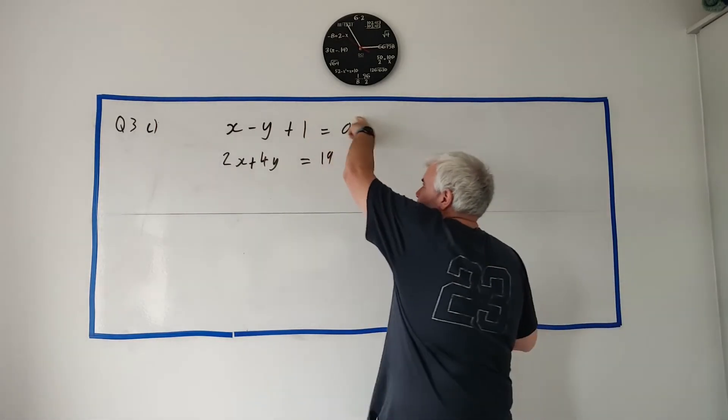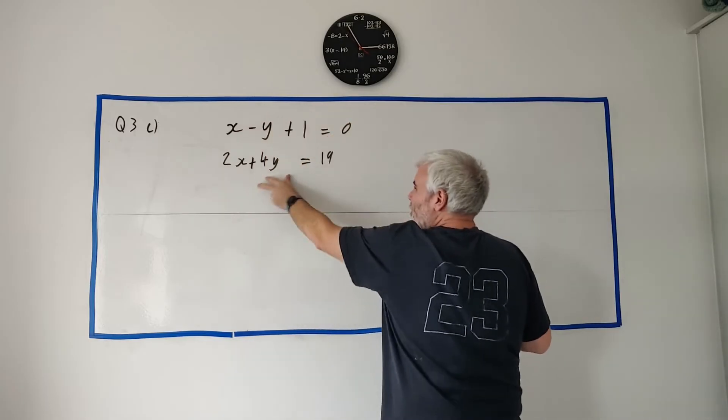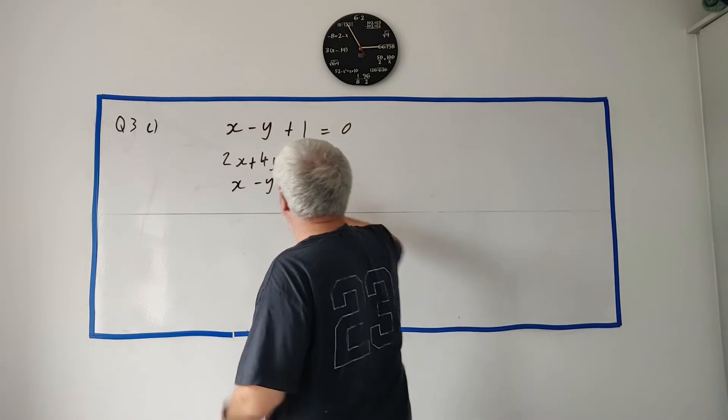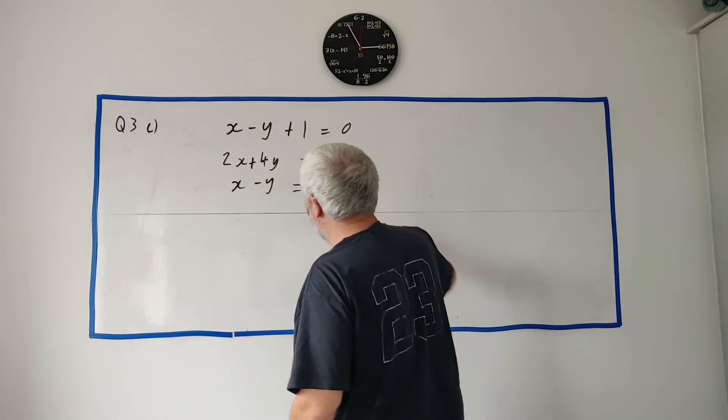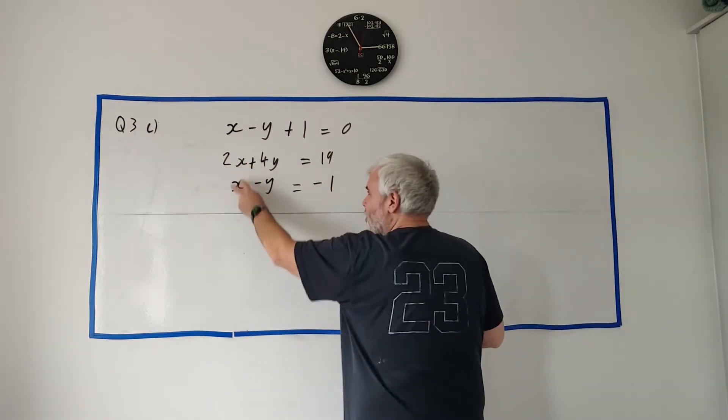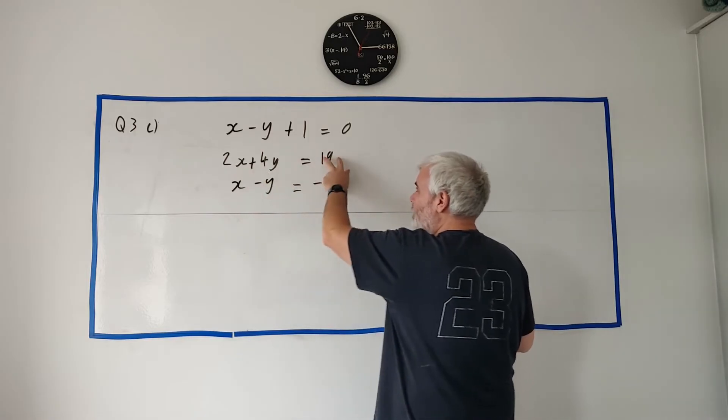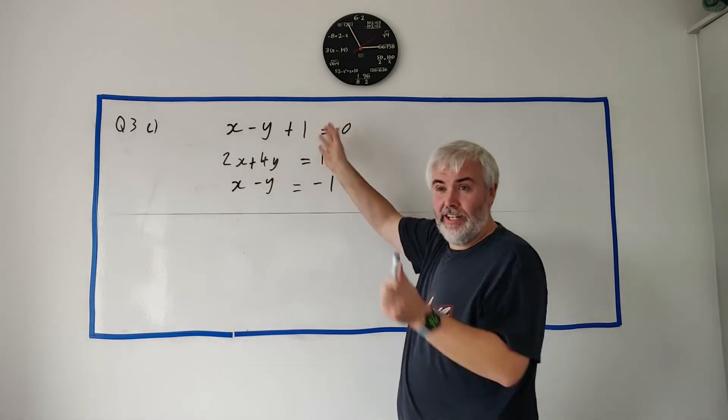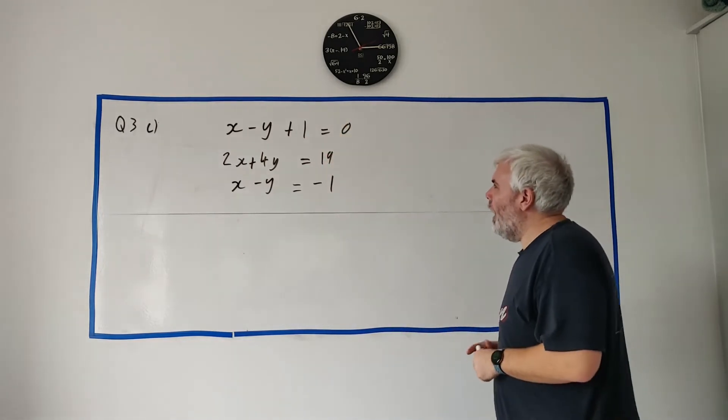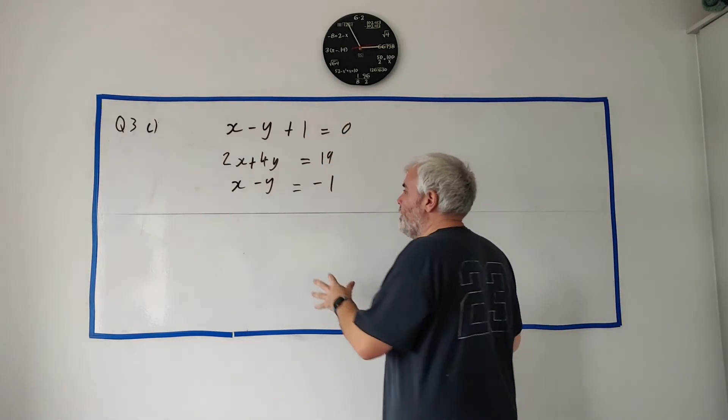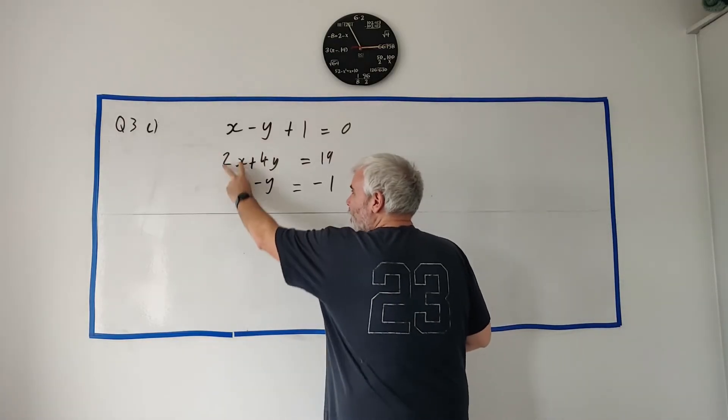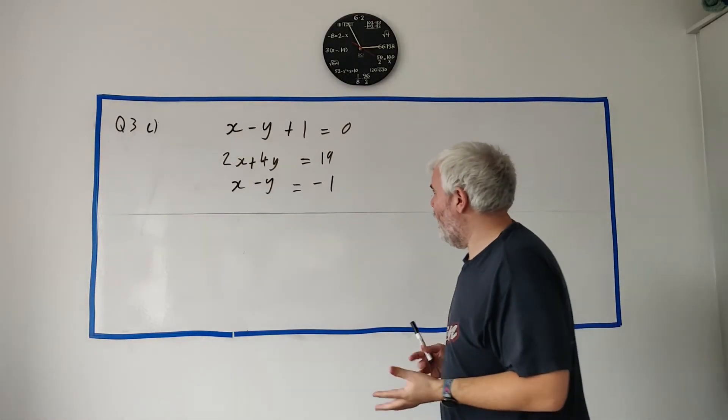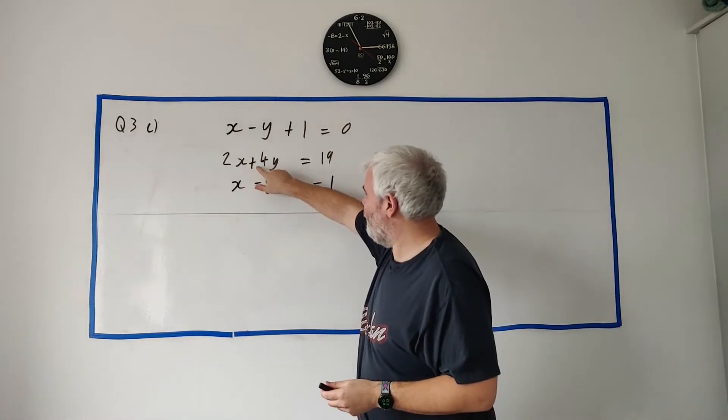How do we go ahead and solve it? First thing I do is I clean up the first equation here, just to make it look a little more like the second one. So I go x minus y and I take one from both sides. Now it just looks a bit neater, doesn't it? The x is together, the y is together, the numbers together. Next thing we want to do is we want to get the x's the same or the y's the same, so we can take them away from each other. And now the y's are already plus and minus. So I'm going to use that.